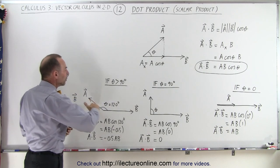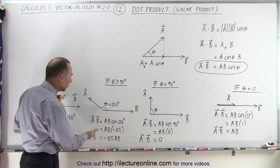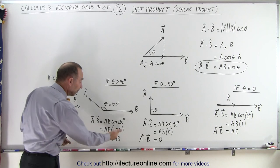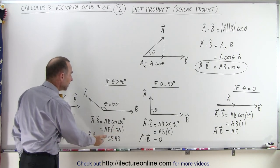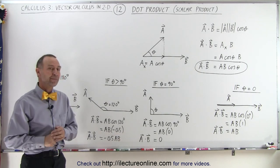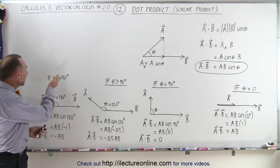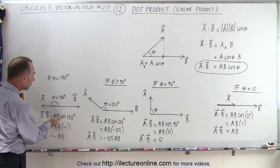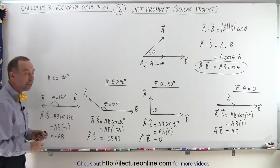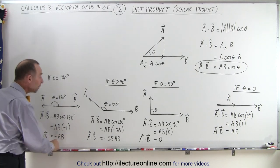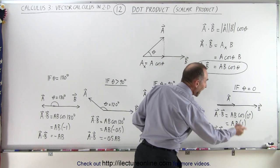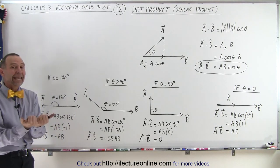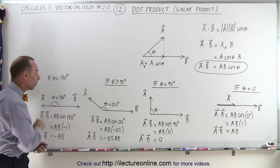What if the angle is greater than 90 degrees? Say 120 degrees: then a·b equals the magnitude of a times the magnitude of b times the cosine of 120 degrees, which is negative 0.5, so a·b would be negative 0.5 times |a| times |b|. And finally, if the angle is 180 degrees so they're pointing in opposite directions, the dot product becomes |a| times |b| times the cosine of 180 degrees, which is negative one — so it becomes the negative of a times b, indicating they're pointing in opposite directions.